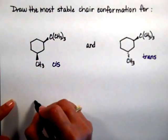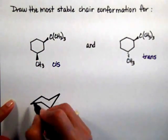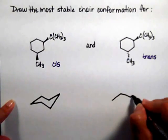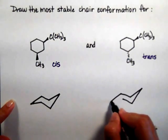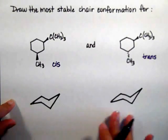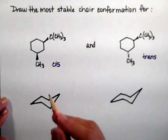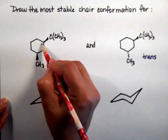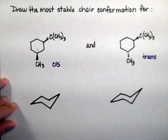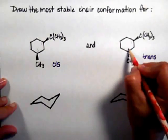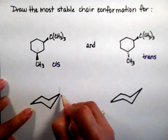I'm going to draw two chairs — one for the cis and one for the trans — and I want to go straight to the most stable chair. This is a 1,3-disubstituted cyclohexane. I'm going to mark my positions in pencil, always starting on my favorite carbon.